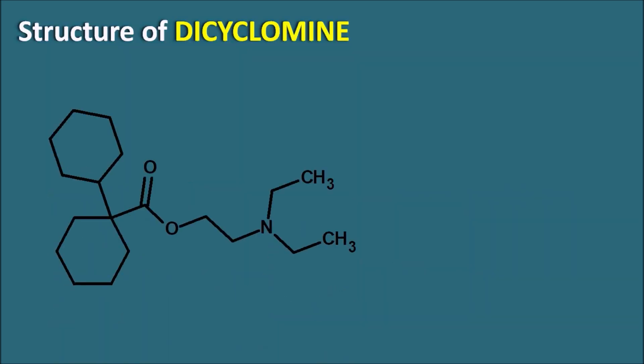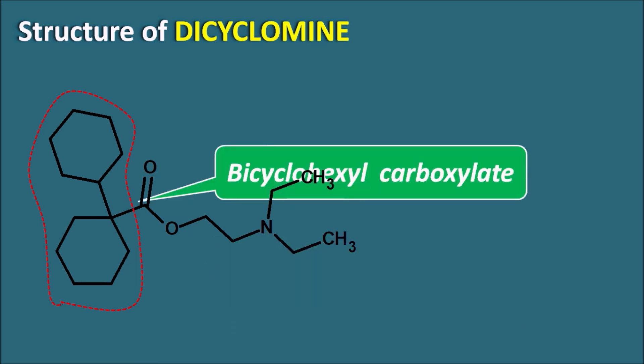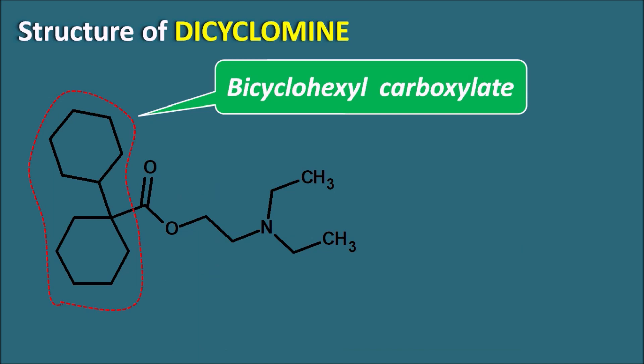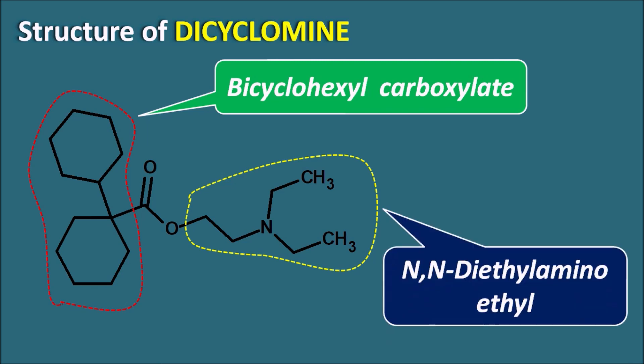This is the structure of Dicyclamine. Here you can observe two cyclic ring systems which are attached directly — this is nothing but the bicyclohexyl ring system, which is further attached with the carboxylic acid in the form of an ester. So Dicyclamine is a bicyclohexyl carboxylic derivative. On the other side we can observe the alkyl moiety which is made up of an ethyl chain attached with the diethylamino group — the N,N-diethylaminoethyl side chain.